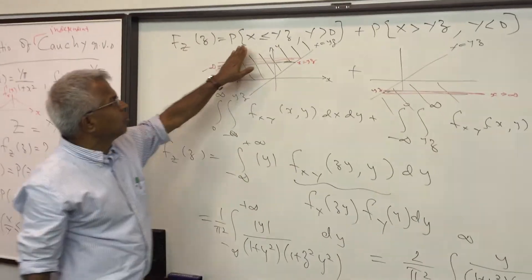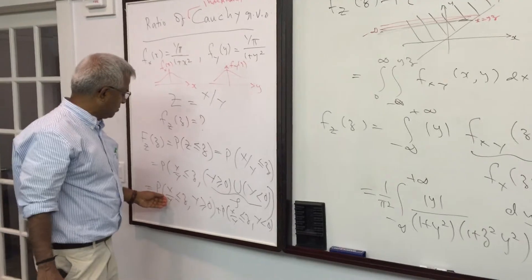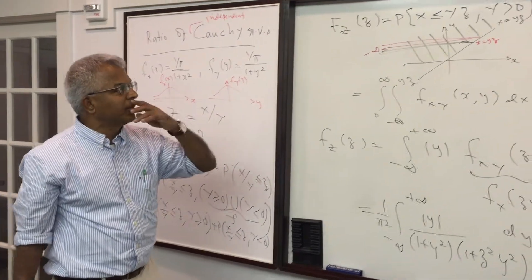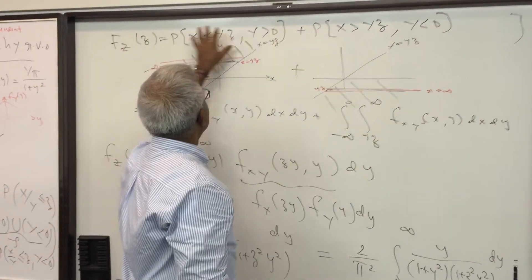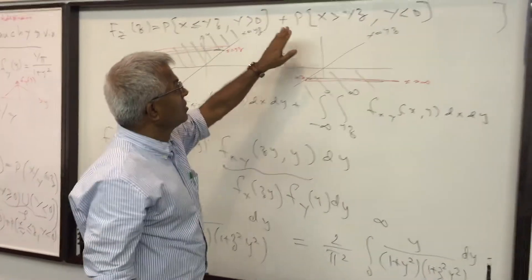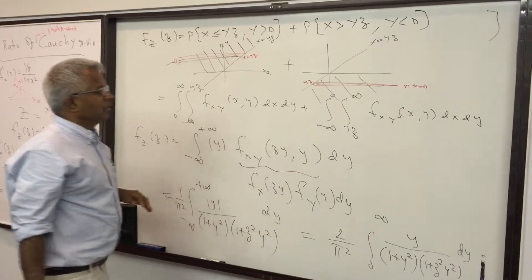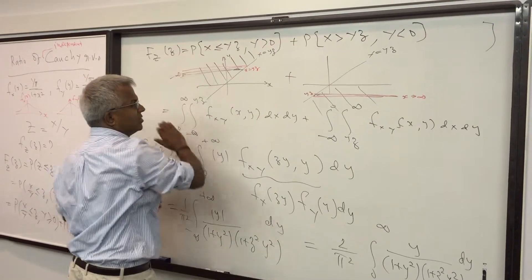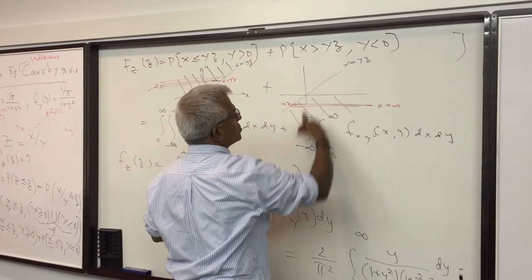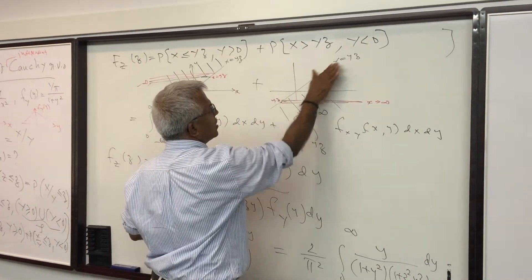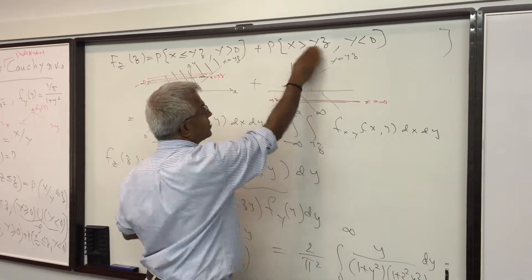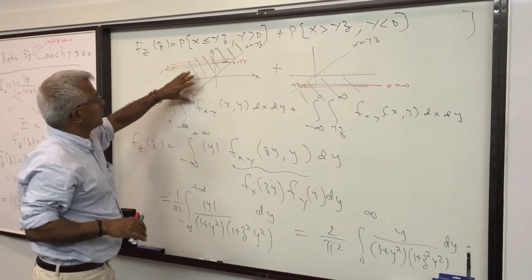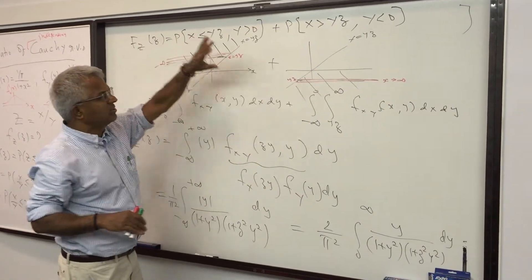The interesting thing is: when Y is positive, the inequality X/Y ≤ z becomes X ≤ Yz; when Y is negative, it reverses to X ≥ Yz. In the region where Y is positive, the area of integration is X < Yz. For the Y negative region, X = Yz is the boundary line and everything to the right is X > Yz.